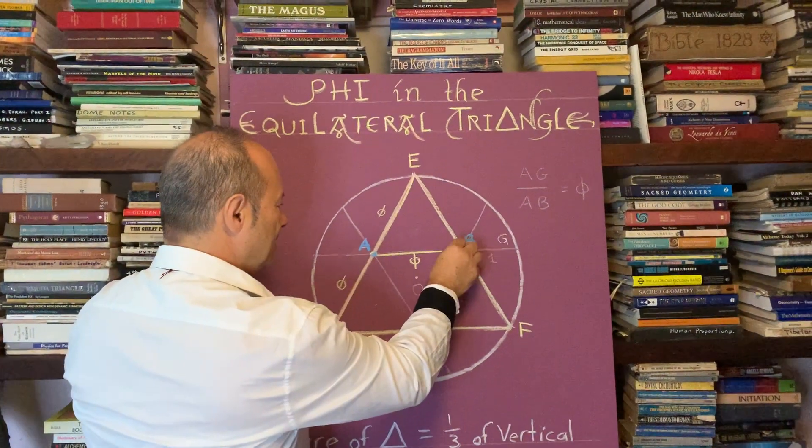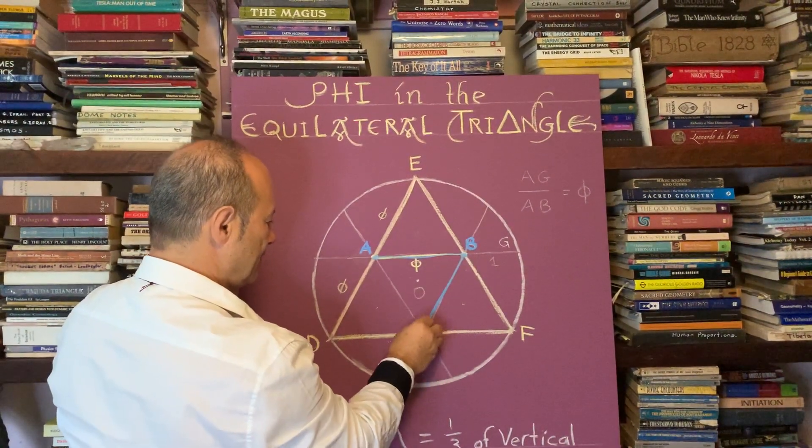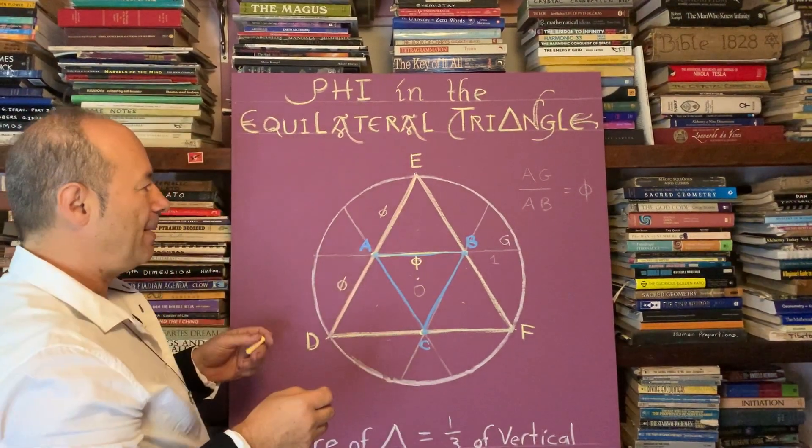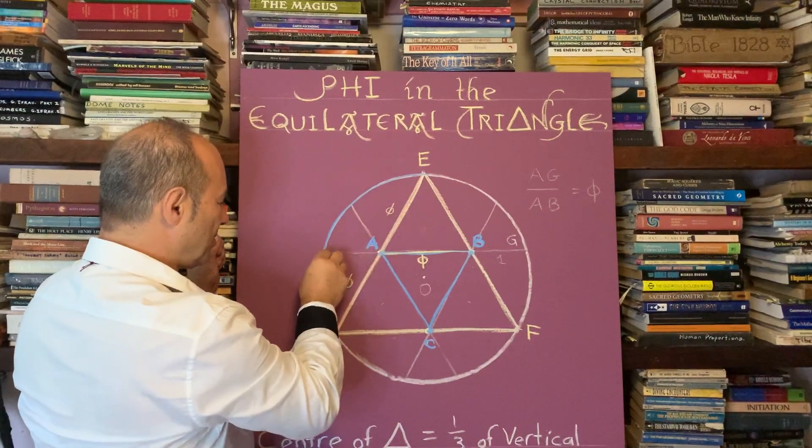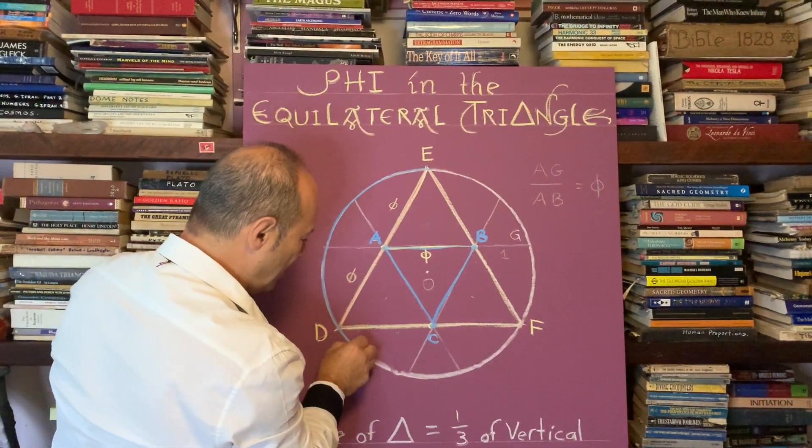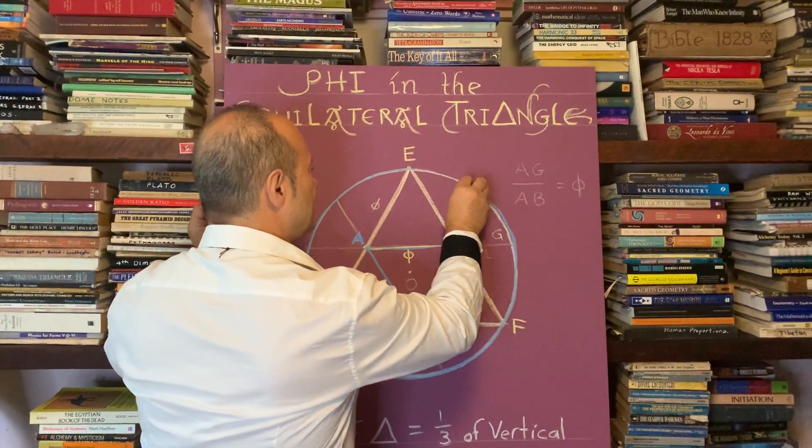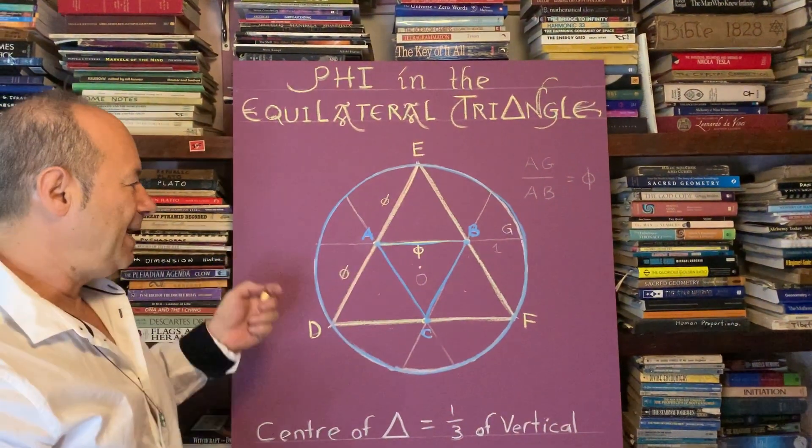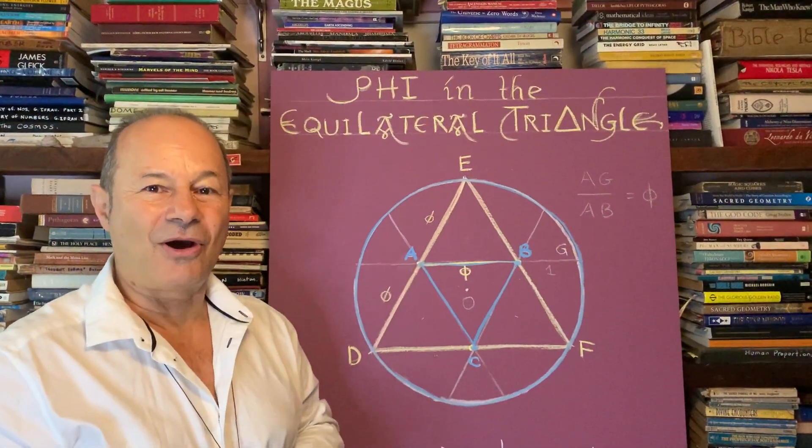So I'm going to draw that in blue here. When we draw a circle around a shape, it's called circumscribed. This is called a circumscribed equilateral triangle, and I'm wondering if you can actually see where the golden ratio is.